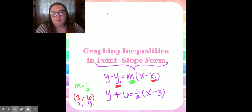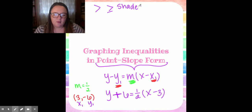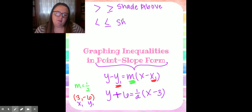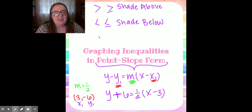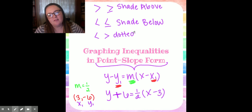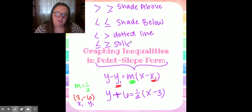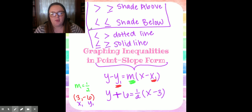Now let's refresh our memory about the inequality rules. If it is greater than or greater than or equal to, we shade above. If it is less than or less than or equal to, we shade below. Then there's one more rule: if it is a less than or greater than, we have a dotted line. And if it is less than or equal to, or greater than or equal to, we have a solid line. You have to pick both of those rules for each inequality.